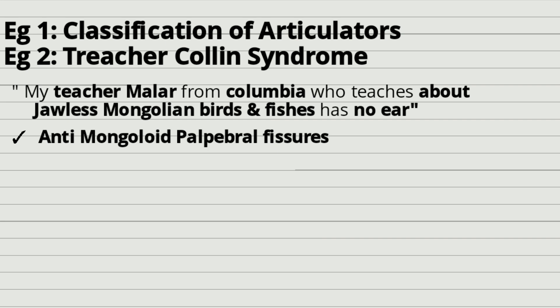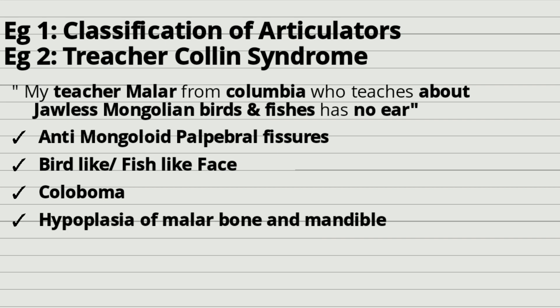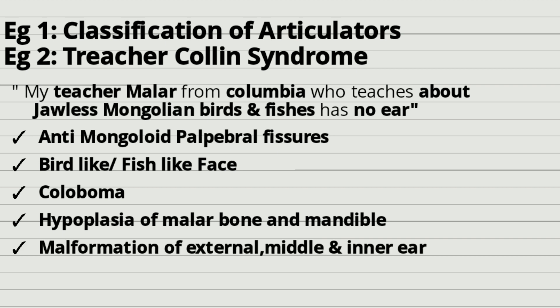So what does this mean? It points to the features of Treacher Collins syndrome. The Mongolian birds and fishes represent anti-mongoloid palpebral fissures, and the bird-like or fish-like face. Colombia becomes coloboma. The teacher's name Malar and the jawless birds and fishes point to hypoplasia of the Malar bone and mandible. And the fact that the teacher has no ear points to malformation of the external, middle, and inner ear. If you can add a bit of humor into such stories, it will be retained even better.